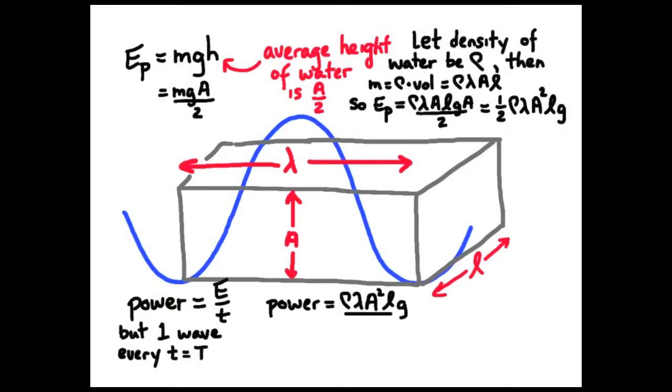So here's my expression for power. And I recognize that lambda over T, the period, is simply V, the wave speed. So I'm going to substitute lambda over T, I'm going to put V in there. And here's my expression for power, 1 half rho V L G A squared.